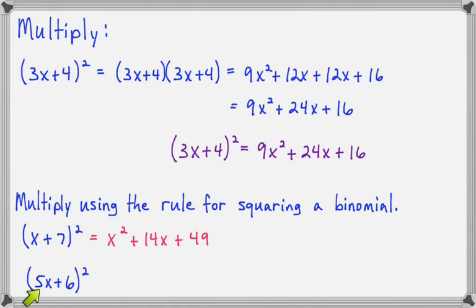On the next problem, 5x plus 6 squared, we'll say 5x times 5x is 25x squared. The middle term will be 5x times 6, which is 30x, times 2. 30x times 2 is 60x. And then last times last will be 36.